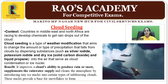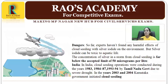There are certain benefits: it improves a cloud's ability to produce rain or snow, supplements the rainwater supply, and cleans the atmosphere by introducing tiny ice nuclei into certain types of sub-freezing clouds — these nuclei provide a base for snowflakes to form. As of now, experts have not found any harmful effect of cloud seeding with silver iodide on the environment, but silver iodide can be toxic to aquatic life. In India, cloud seeding operations were conducted during 1983, 1984–87, and 1993–94 by the Tamil Nadu government due to severe drought.